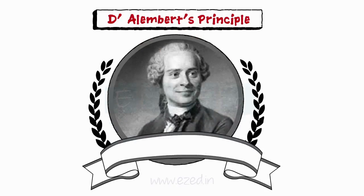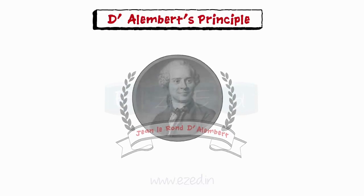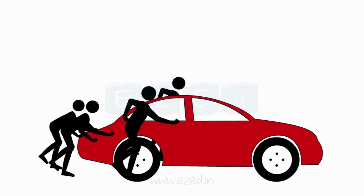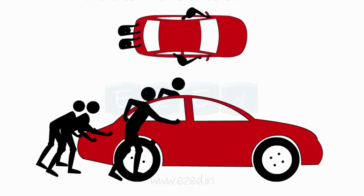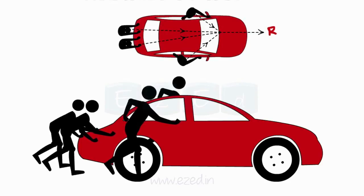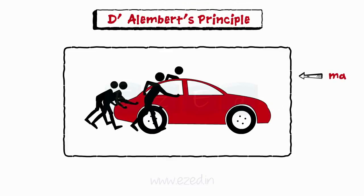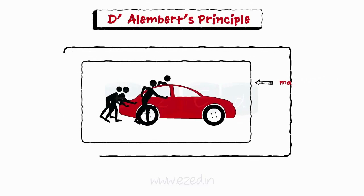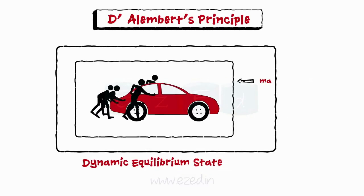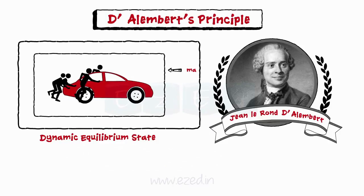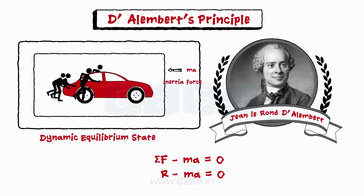D'Alembert's principle is an alternative form of Newton's second law of motion, stated by the 18th century French polymath Jean le Rond D'Alembert. Consider a car of mass M being pushed by four men — multiple forces acting on the car produce a resultant force R, giving the car acceleration A. If we apply an equal and opposite force M-A to the system, it comes to rest. This is called dynamic equilibrium. According to D'Alembert's principle, if a system is in dynamic equilibrium, the summation of all forces equals zero. This opposing M-A force is also called the inertia force.